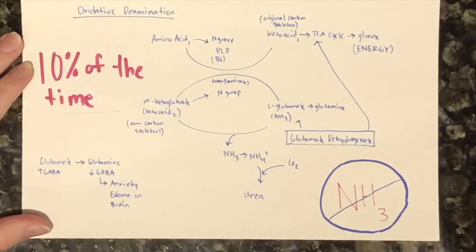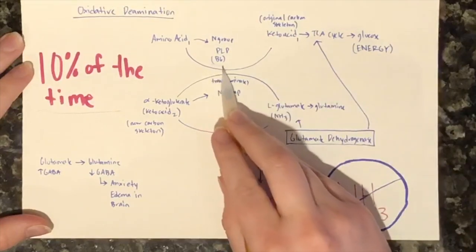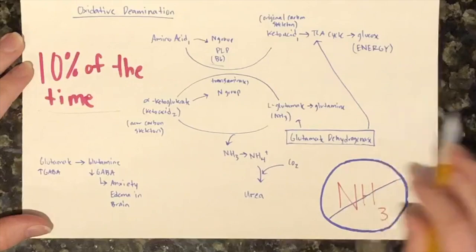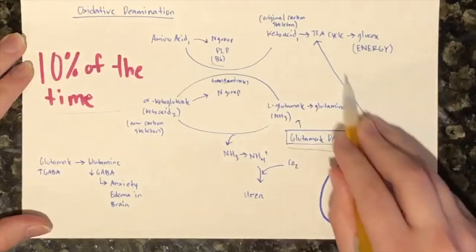Like in transamination, the amine group is held by PLP, leaving us with the carbon skeleton. However, in oxidative deamination, an enzyme called glutamate dehydrogenase burns that carbon skeleton down into glucose to give us energy.